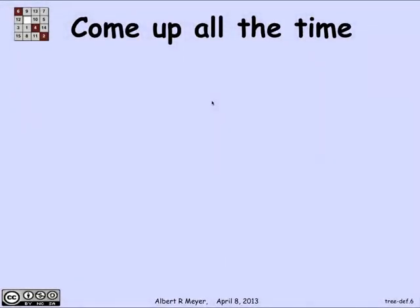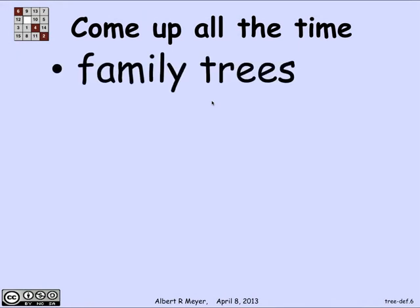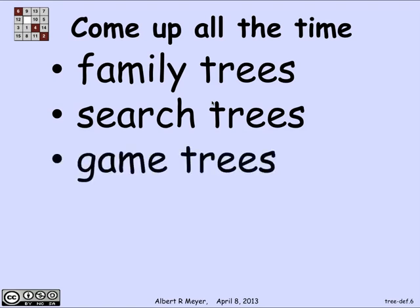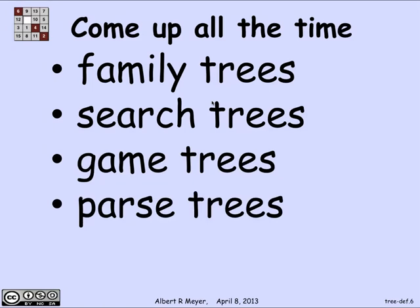Now they really come up all the time, and why is that? Well there are family trees which you may be familiar with where you're drawing a picture of the descendants of a given person and they keep branching out in a tree structure as traditionally displayed. There are search trees which come up all the time in computer science where you branch on the answer to some question which tells you which way to search next. There are game trees which we've already discussed in this class which are used to define great games and strategies.